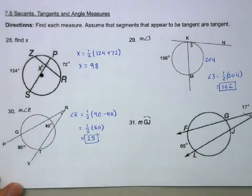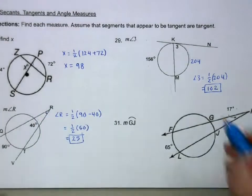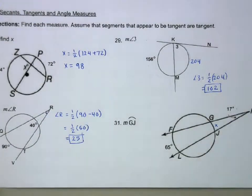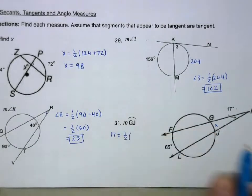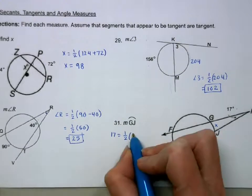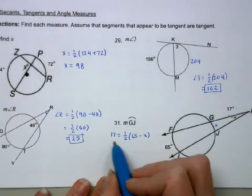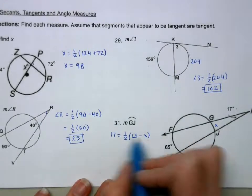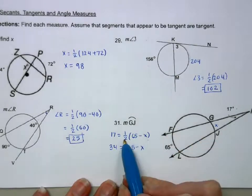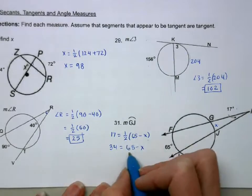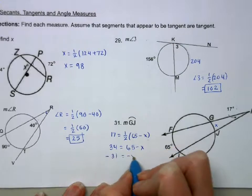For this one, it's the same idea, except for what I'm trying to find is one of the arcs. So I'm going to set up the equation where the angle 17 equals 1 half of outside minus inside. So 65 minus X. Algebraically, we could distribute or just multiply both sides by 2, which on this side just gets rid of the 1 half. So then if I subtract the 65, we get negative 31, which means X is 31 because we don't want negative angles.